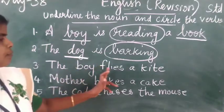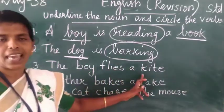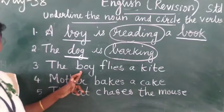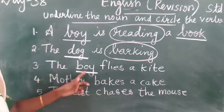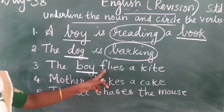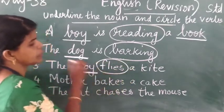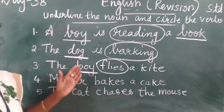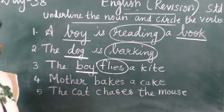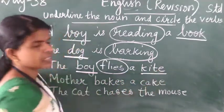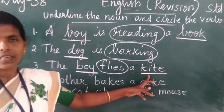Third sentence: The boy flies a kite. Boy is the name of a person — that is the noun. Flies is the action word — that is the verb. Kite is the name of a thing — that is a noun.